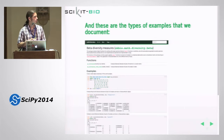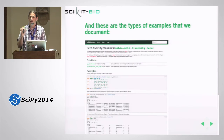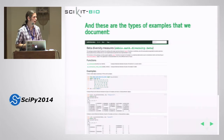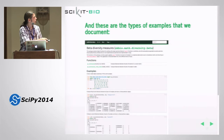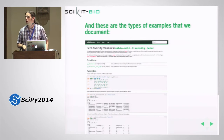We've also focused a lot on API documentation. This entire example I just worked through is actually part of our doctest module-level documentation for beta diversity, up on the website — and you're guaranteed it's going to work. It's all doctested every time there's a pull request. What you can do is go there, copy the code, paste it into your IPython notebook, get it working, and then adapt it for your own purposes.